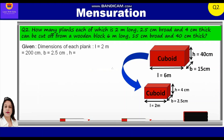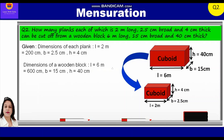Breadth is equal to 2.5 centimeter, height is equal to 4 centimeter. Dimensions of wooden block: length is equal to 6 meters, that is equal to 600 centimeter, breadth is equal to 15 centimeter, height is equal to 40 centimeter. To find: number of planks that can be cut off from this wooden block.